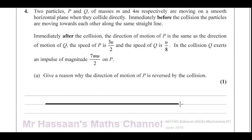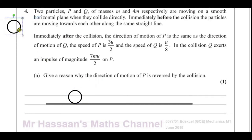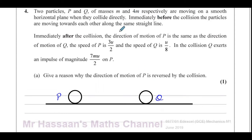We have a smooth plane. We have these two objects. That's P and that's Q. P has a mass of M and Q has a mass of 4M. They are moving towards each other before the collision. I'll put 'before' over here and then put the details after underneath.